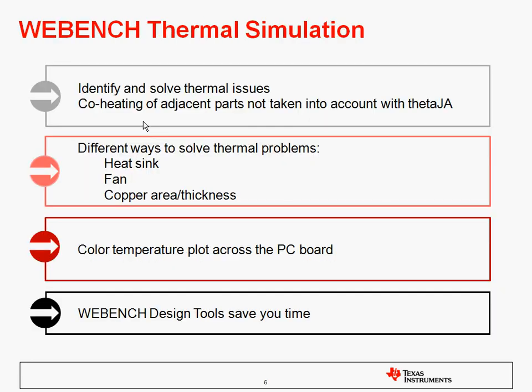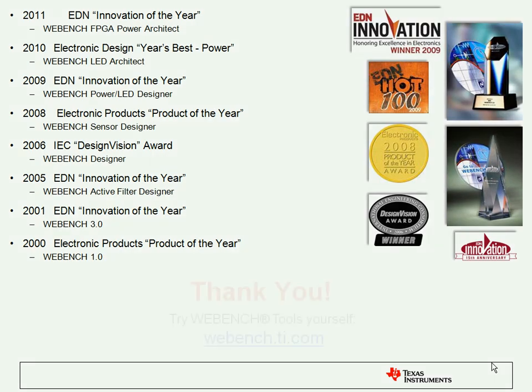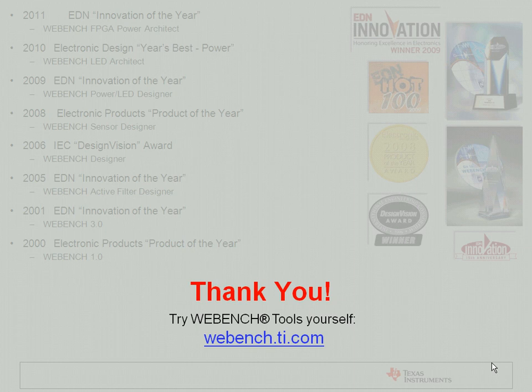To summarize, Webbench thermal simulation allows you to identify and solve thermal issues including the co-heating of adjacent parts. It gives you different ways to solve thermal problems — either with heat sinks, fans, copper area, or thickness. It gives you a color temperature plot across the PC board and lets you visualize the results, and in general saves you a lot of time in your design. Thanks for joining us today. I encourage you to try Webbench tools yourself at webbench.ti.com.